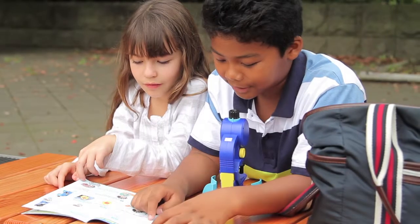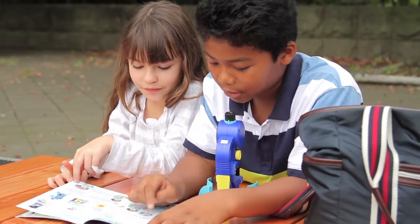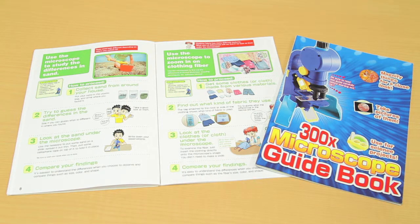The accompanying booklet introduces how to observe sand, cloth fibers, plankton, and pollen, as well as what to look for. Try observing many different things.